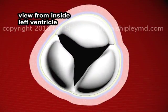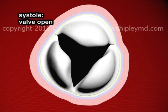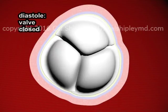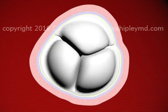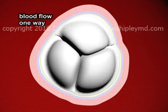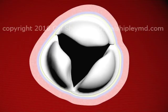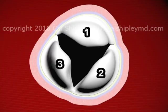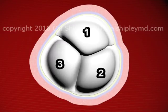Here is a closer look at the aortic valve, viewing it from inside the left ventricle. During systole the valve is open, and during diastole it is closed. The action of the valve therefore ensures that blood flow is one way only, from the left ventricle into the aorta. This view of the valve also shows that it is composed of three separate leaflets, all of which are attached to the aortic annulus, located at the root of the aorta.